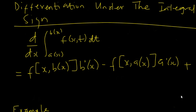Anytime you have the derivative of such an integral, f is a function of both X and T — not only X. If it had been a function of only X, the derivative and integral would simply cancel. But since f is a function of X and T simultaneously, and you're differentiating with respect to only X, they don't cancel.